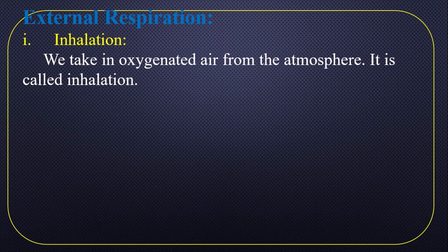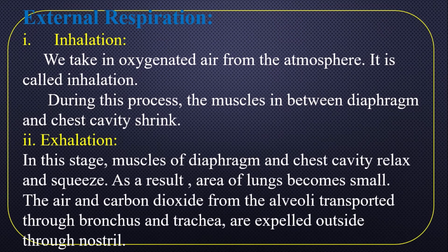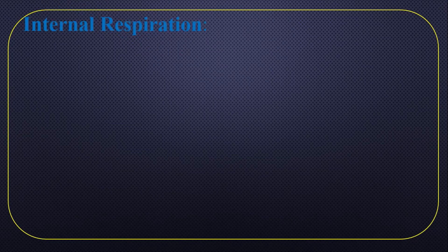We take in oxygenated air from the atmosphere — this is inhalation. During exhalation, the diaphragm and chest cavity relax and squeeze, as a result the area of the lungs becomes small. The air and carbon dioxide from the alveoli are transported through bronchus and trachea and expelled outside through the nostril. So, we inhale oxygen-enriched air and exhale carbon dioxide-enriched air.